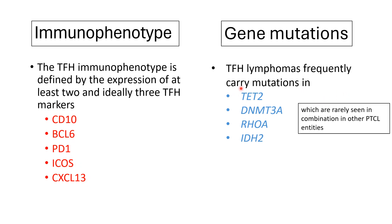In terms of genetic mutations from gene expression profiling, TFH lymphoma frequently carries TET2, DNMT3A, RhoA, and IDH2 mutations, which are rarely seen in combination outside of T follicular helper cell lymphoma.